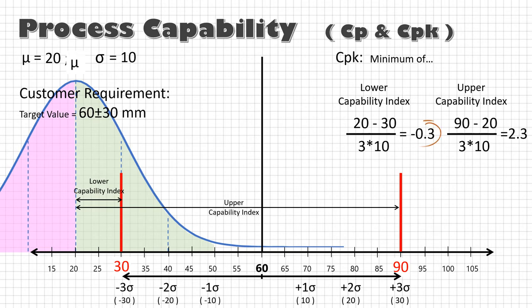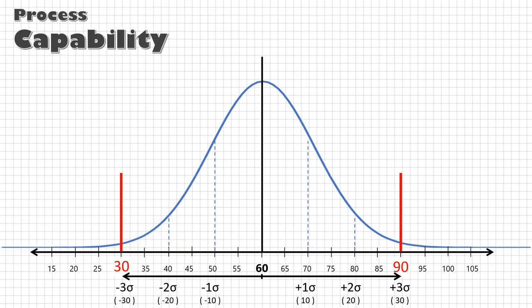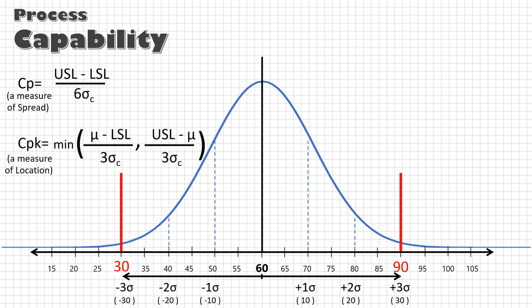Also if I move my process further, CpK can even become negative. So once again, Cp and CpK both are required to define the process capability, that is the best a process can deliver.